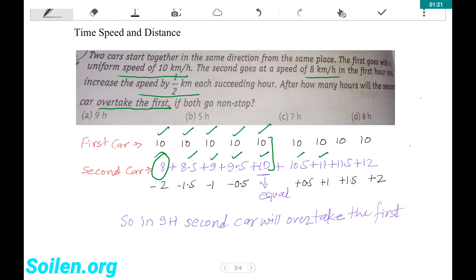In the first 4 hours, the second car covers 2 km less, then 1.5 km less, 1 km less, and 0.5 km less than the first car.